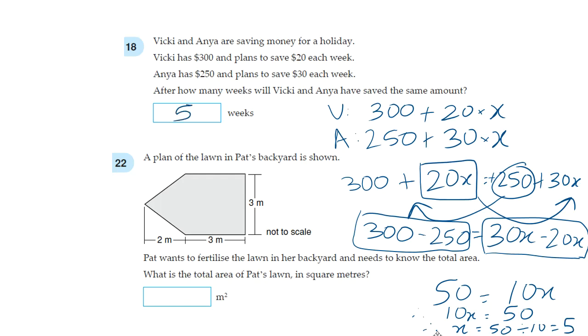So our answer is 5. After 5 weeks they will have the same amount. And if you just wanted to double check, if you had 5 here then the total would be 400. And if you had 5 here it would be 250 plus 150 which would also give you 400.